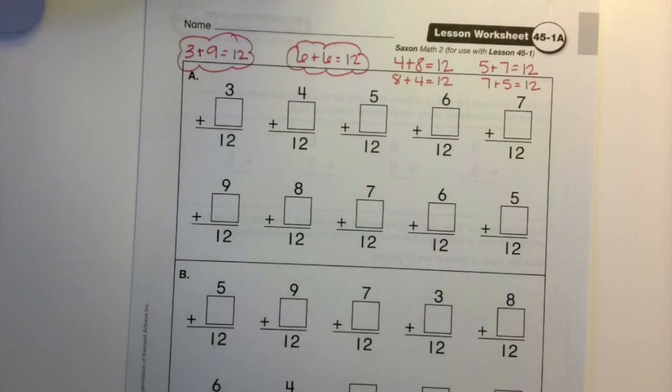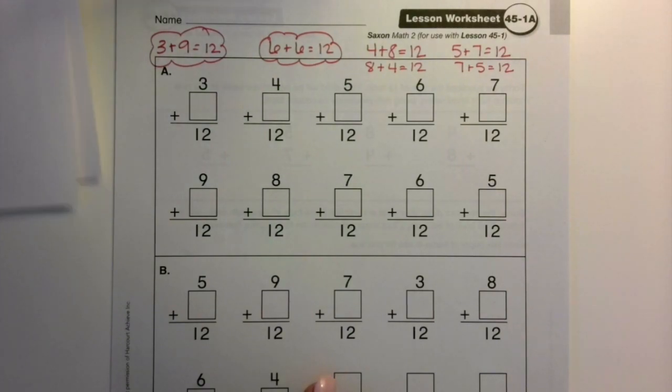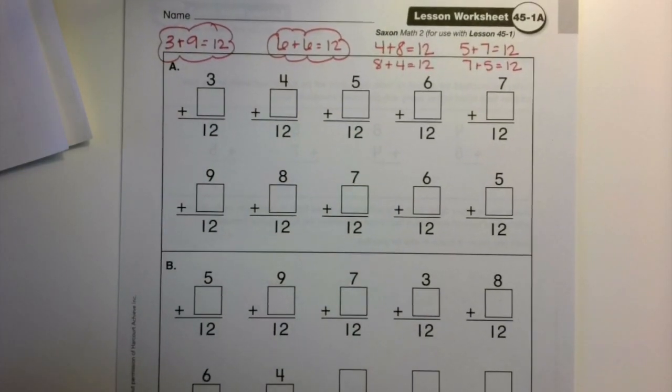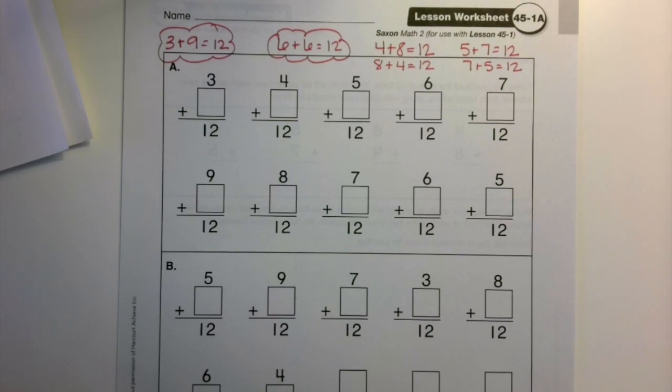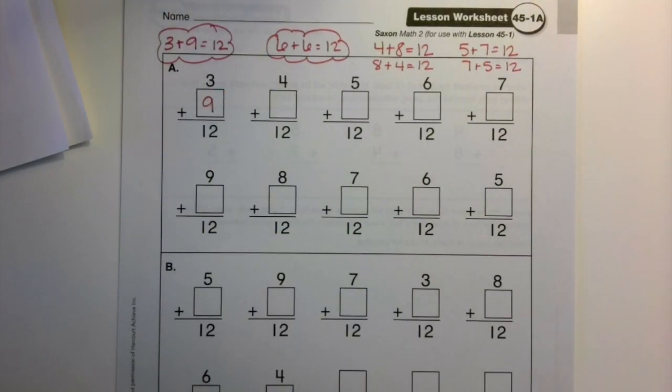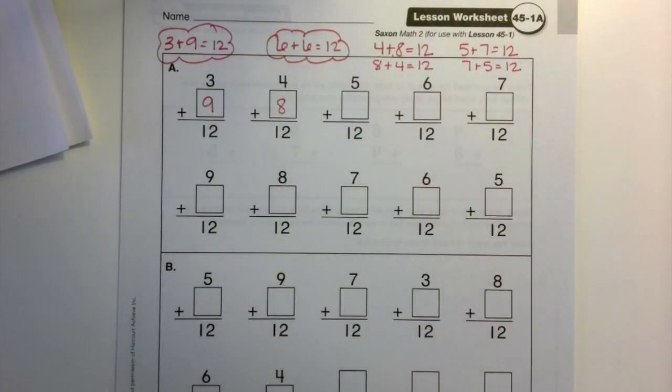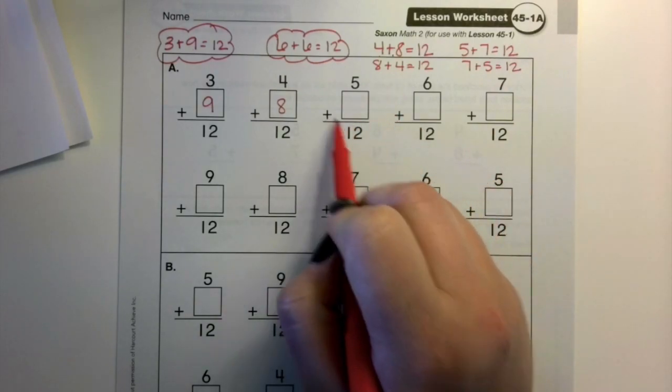So what we're going to do is we're going to practice these facts on this fact sheet. One of the addends in each problem is missing, so we need to go ahead and figure out what that's going to be. What is the missing number in this first problem? 3 plus what is 12? 9. 4 plus what is 12?